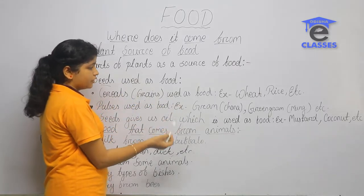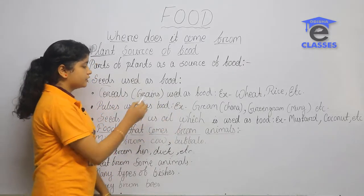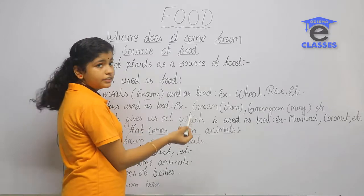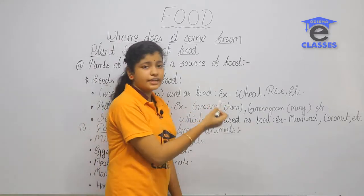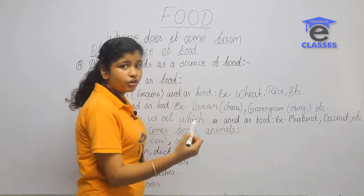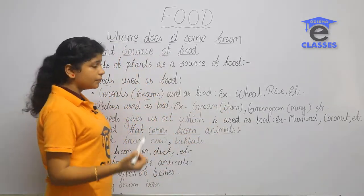Cereals and grains are used as food. Examples of grains used as food include wheat, rice, chowla, and guhama (jowar), etc.